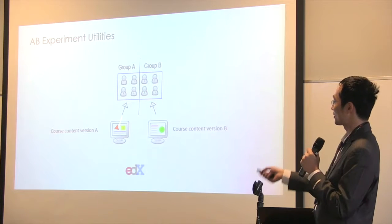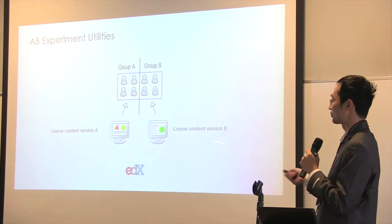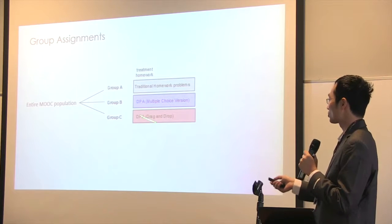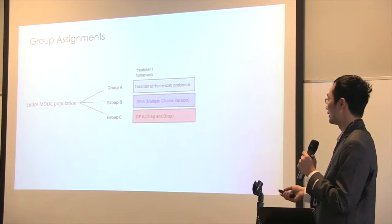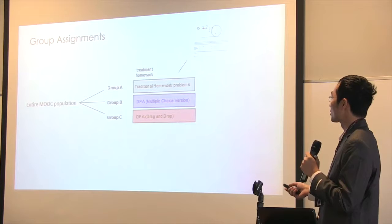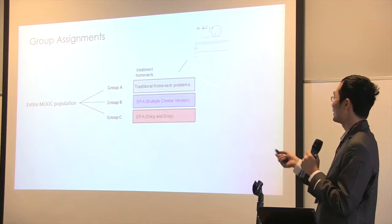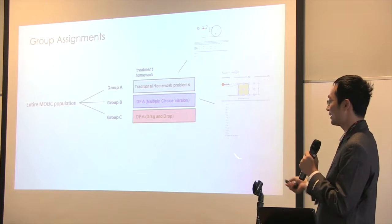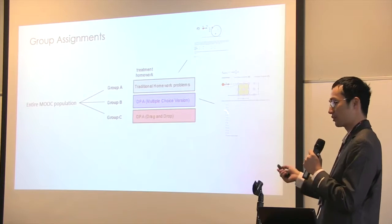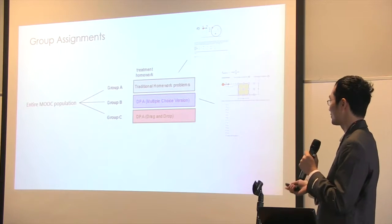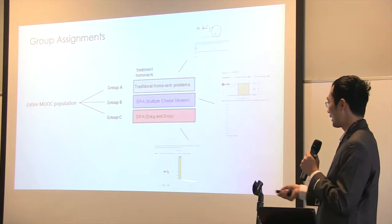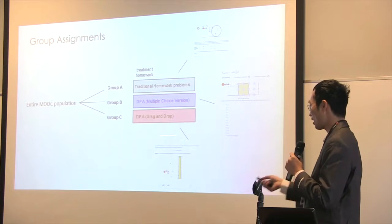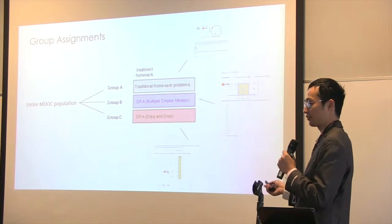We used the AB experiments feature of the edX platform, which splits the student population into multiple groups and gives them different types of course contents. In these experiments, we split our student population into three groups. Group A gets training in traditional physics homework problems, Group B gets training in multiple choice format deliberate practice activities, and Group C uses the drag-and-drop deliberate practice format.